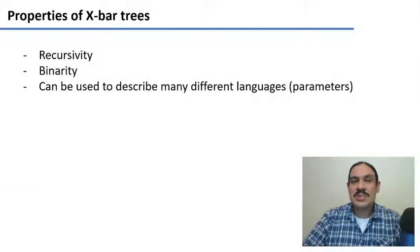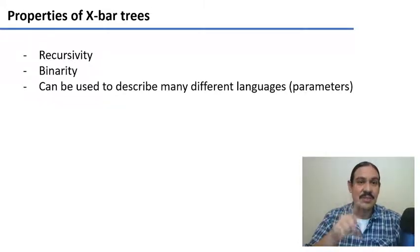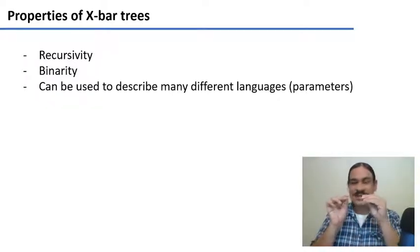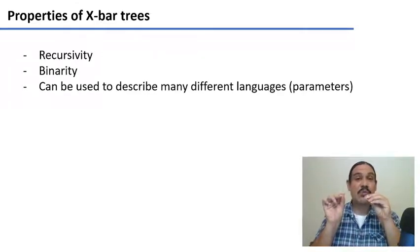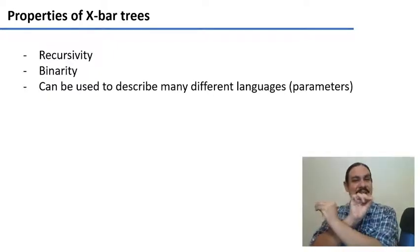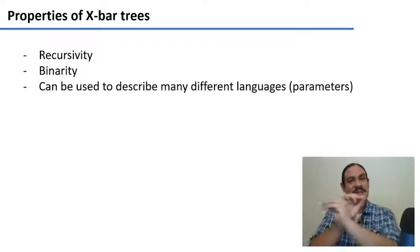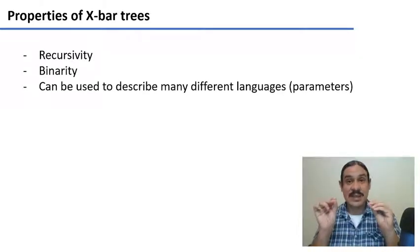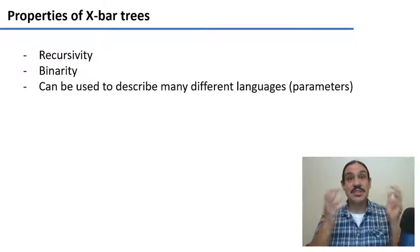Here, I'm going to focus on three properties of X-bar trees: recursivity, binarity, and something called parameters, which is that if you have a phrase with a head and a complement, there's really only two ways that you can order it: head-complement or complement-head. Believe it or not, this very simple change is going to explain a lot of differences between languages as similar as English and Japanese.